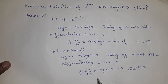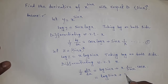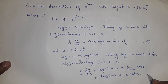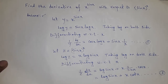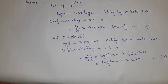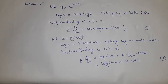Simplifying this: log sin x plus x times cos x by sin x, which equals log sin x plus x cot x. This is equation 2. Now dividing equation 1 by equation 2.